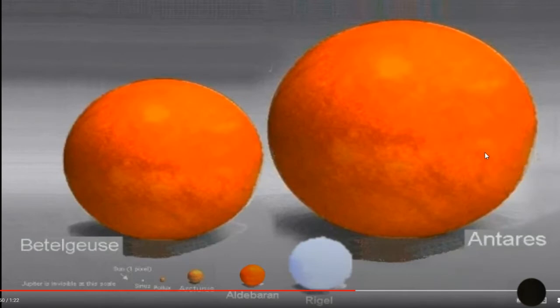As you can see on this one, Pollux, Arcturus, Aldebaran, Rigel, Betelgeuse, and Antares. They just look very different.